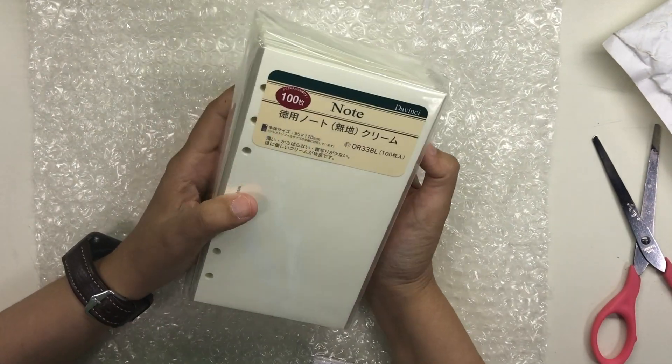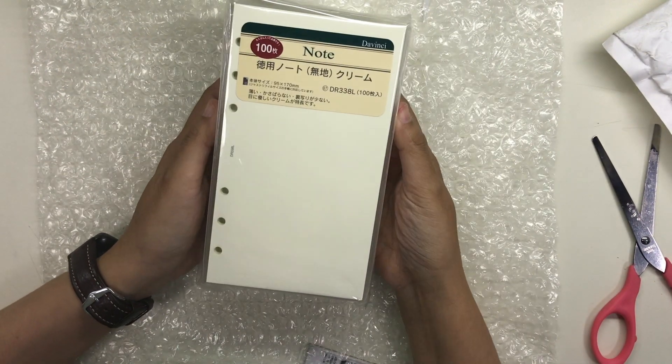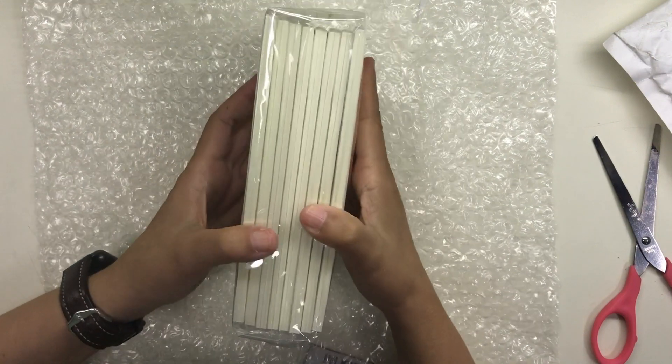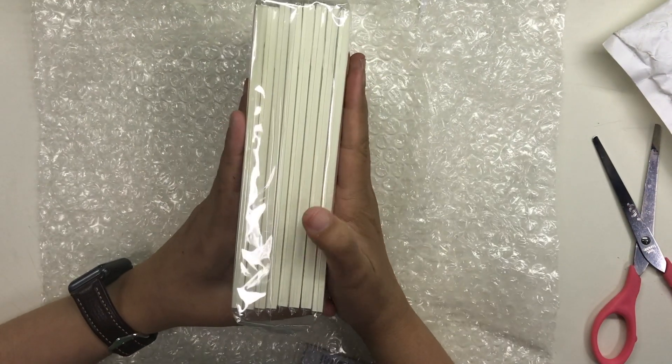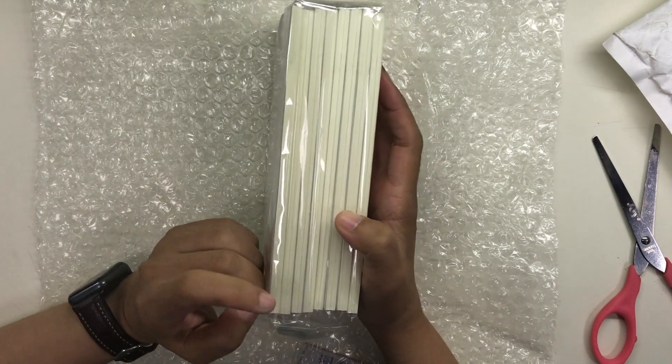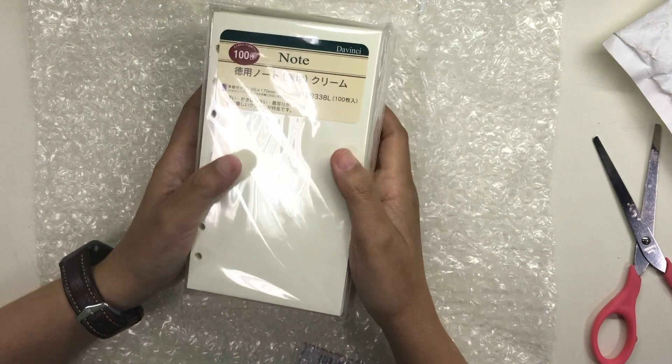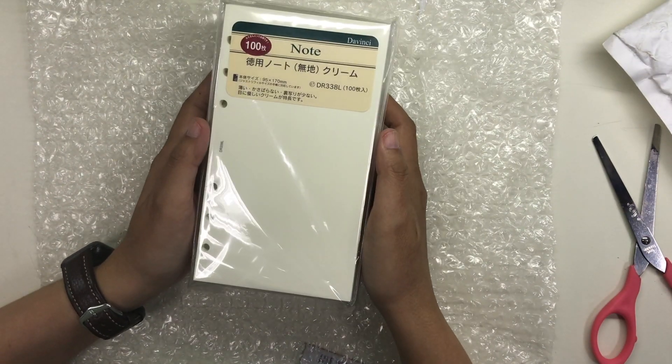Now in my video where I talked about shifting away from the Tomoe River paper I showed that I took apart a Midori MD A5 notebook and used the paper for that to make my planner pages for August. I love the Midori MD paper but it's not cost efficient to keep buying notebooks and then later tearing them apart.